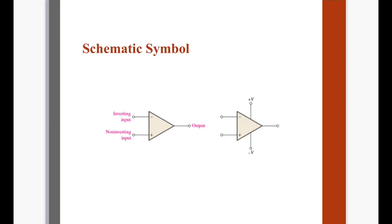Ito yung schematic symbol ng operational amplifier. As you can see, meron siyang parang triangular shape, whereas the bigger side of the triangle is the input side and the vertex is the output side. Gagamitin natin yung symbol na ito to our advantage para matandaan yung characteristic ng isang operational amplifier. Meron siyang dalawang input — the inverting input which is the negative input and the non-inverting input which is the positive input — and meron siyang isang output. In some cases, linalagyan siya ng supply to indicate na it is practical, and also yung supply, it can be the limit of the output voltage ng isang operational amplifier.